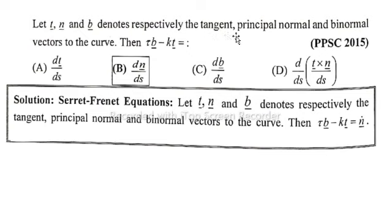b vector denotes respectively the tangent, principal normal and binormal vectors to the curve. Then tau b vector minus k t vector is equal to... solution.